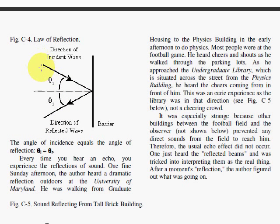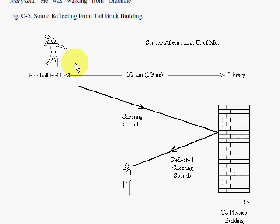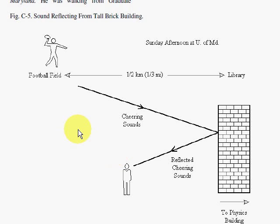Here we have an example of a wave coming in, hitting this barrier and bouncing off. You can think of this as a flashlight heading toward a mirror and bouncing off the mirror. An example with sound was the football game at the University of Maryland where the Terrapins did something good, everyone cheered, the cheers came across the campus, hit a brick wall, came down toward me, and I heard the cheers after I had passed the football field — behind me. Very strange effect.